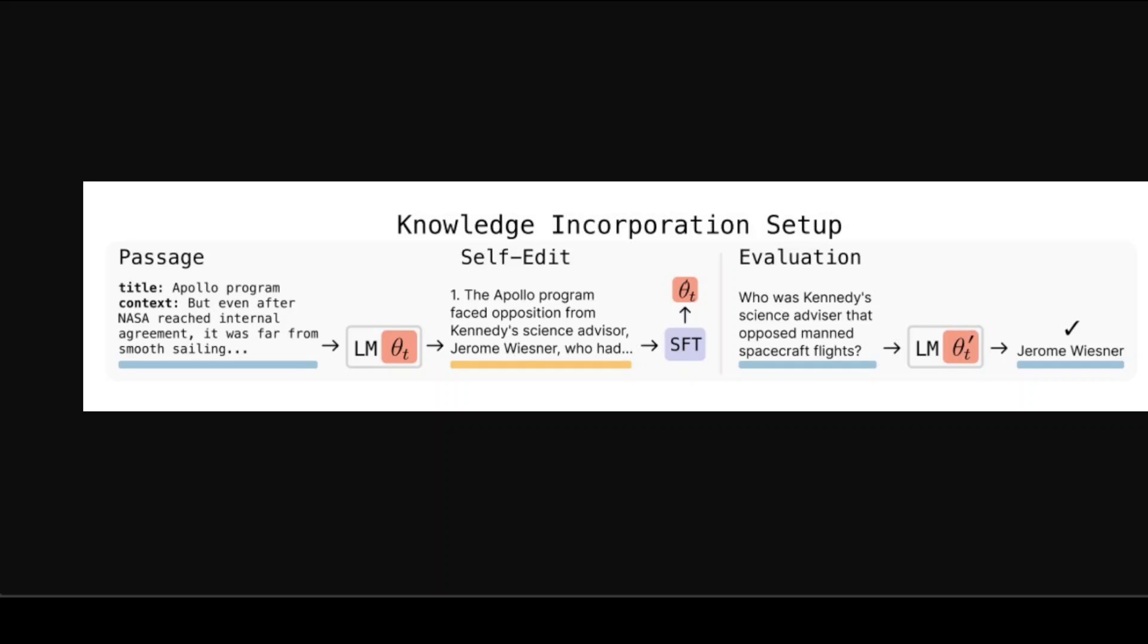Instead of just fine-tuning directly on the passage text, SEAL generates implications - basically rephrasing and expanding on the information in ways that might be easier to learn from. For instance, if the passage mentions that Kennedy's science advisor Jerome Wiesner opposed the Apollo program, the model might generate implications like 'the Apollo program faced opposition from within Kennedy's administration.' After fine-tuning on these self-generated implications, they tested the model by asking it questions about the passage without providing the original text. The improvement in accuracy becomes the reward signal that teaches the model to generate better implications next time.